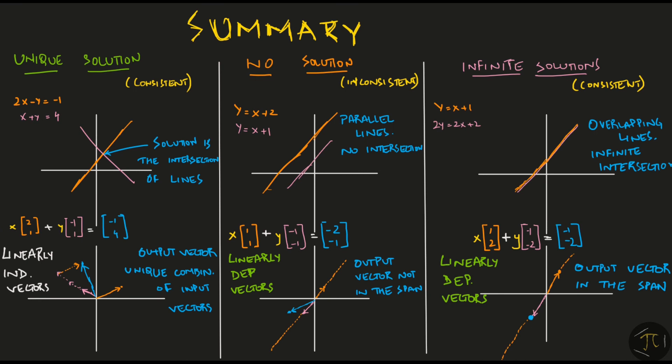Here is a summary of the three types of systems in two unknowns. You can either get a unique solution, no solution at all, or infinite solutions. One of these three things must always happen whenever you have any system of equations in any number of unknowns. Note that only when you have linearly independent vectors, you can have a unique solution. But if the vectors are linearly dependent, you either get no solution, or you get infinite solutions.